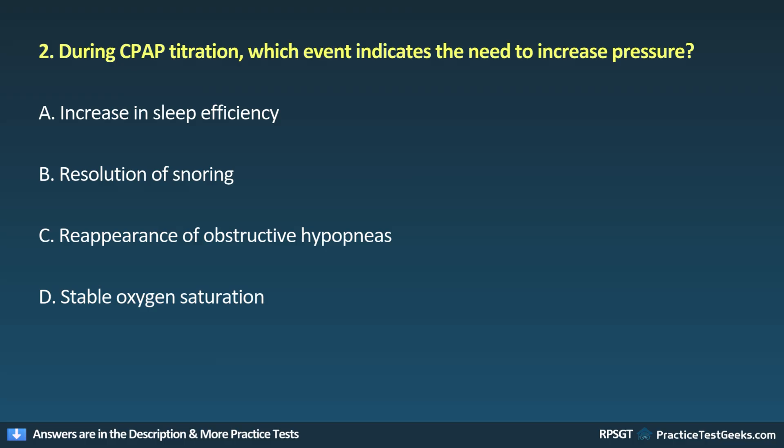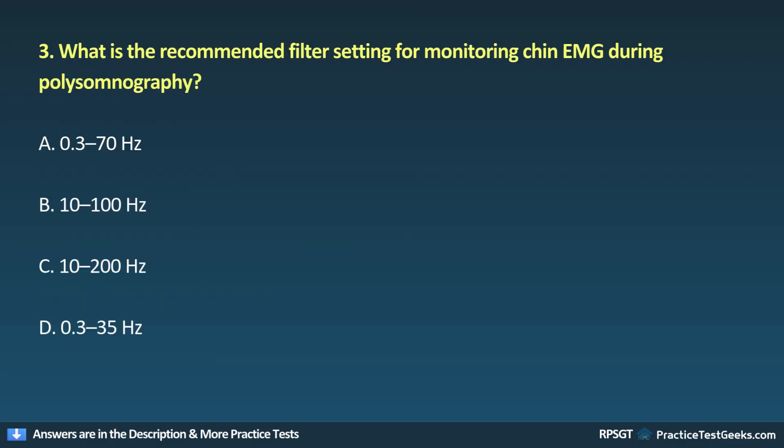Question 2: During CPAP titration, which event indicates the need to increase pressure? A. Increase in sleep efficiency, B. Resolution of snoring, C. Reappearance of obstructive hypopneas, D. Stable oxygen saturation.